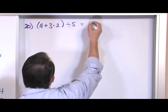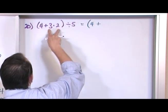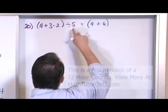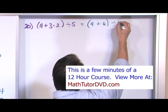So we do that. We keep the parentheses for now: 4 plus... we do this first. 3 times 2 is 6, close the parentheses. We've got to keep the divided by 5 going on here.